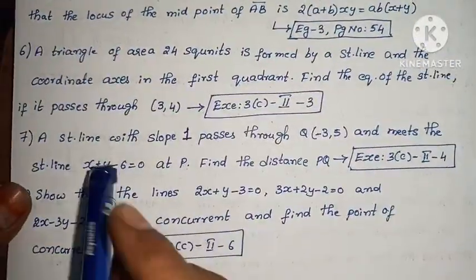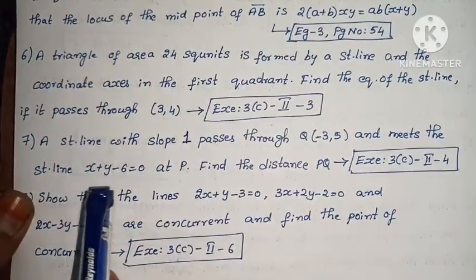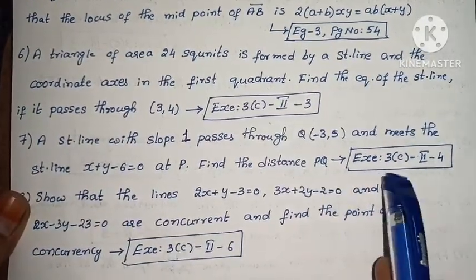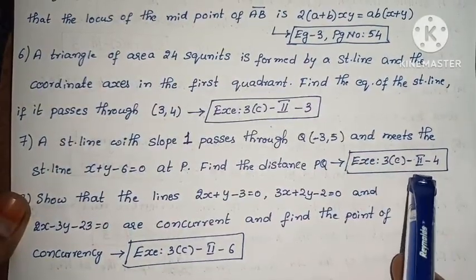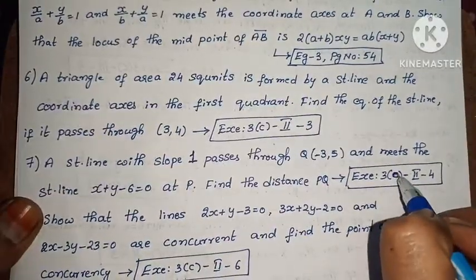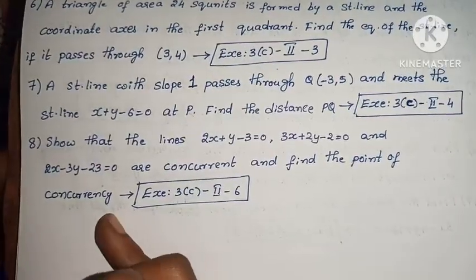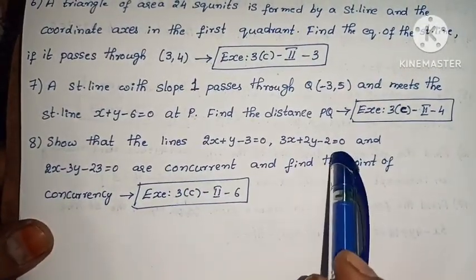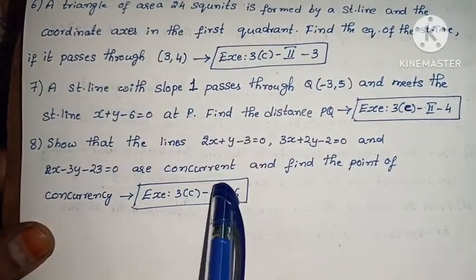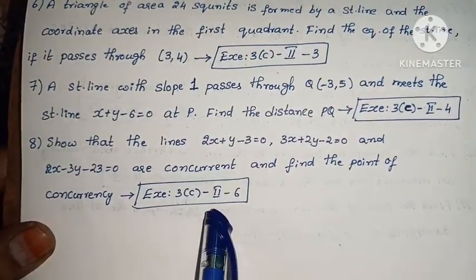Next, find the equation of the straight line if it passes through (3, 4). Next, a straight line with slope 1 passes through Q(-3, 5) and meets the straight line x plus y minus 6 equals to 0 at P. Find the distance PQ. This problem has been repeated in many question papers, so it is important. Next, show that the lines 2x plus y minus 3 equals to 0, 3x plus 2y minus 2 equals to 0 and 2x minus 3y minus 23 equals to 0 are concurrent and find the point of concurrency.